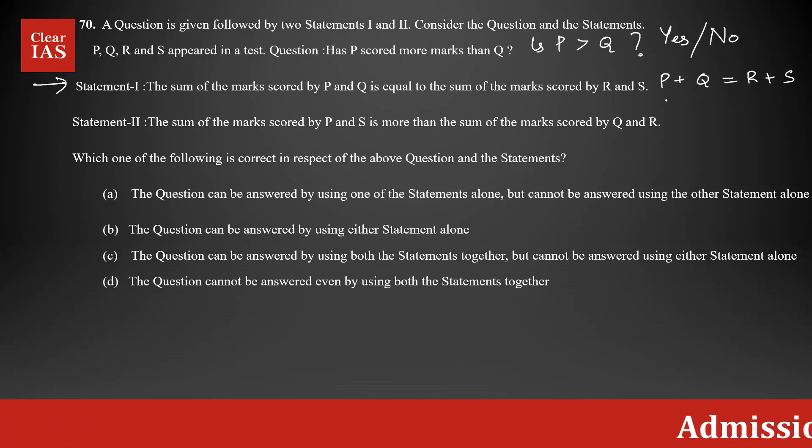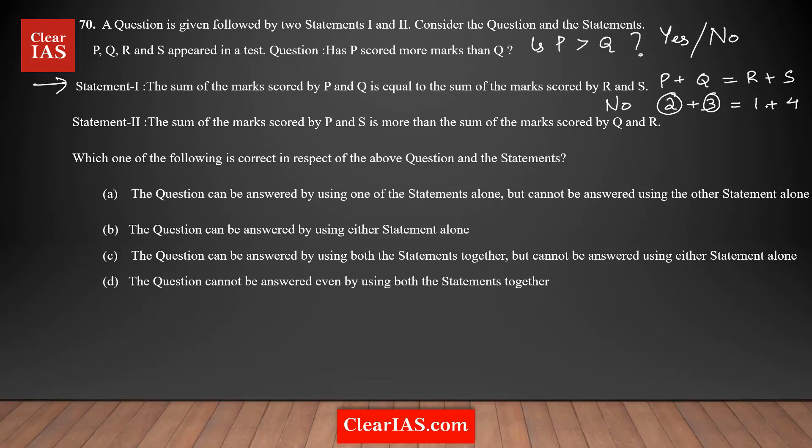Let's say I am picking P is 2, Q is 3. So P plus Q is 2 plus 3, 5. Here I am going to pick some different numbers, let's say 1 and 4. I am just picking random numbers that satisfy this equation. And in this case, what is the answer you are getting? Is P greater than Q? Is 2 greater than 3? That is your question, right? You are getting a no. In the value you substituted, you are getting no as an answer.